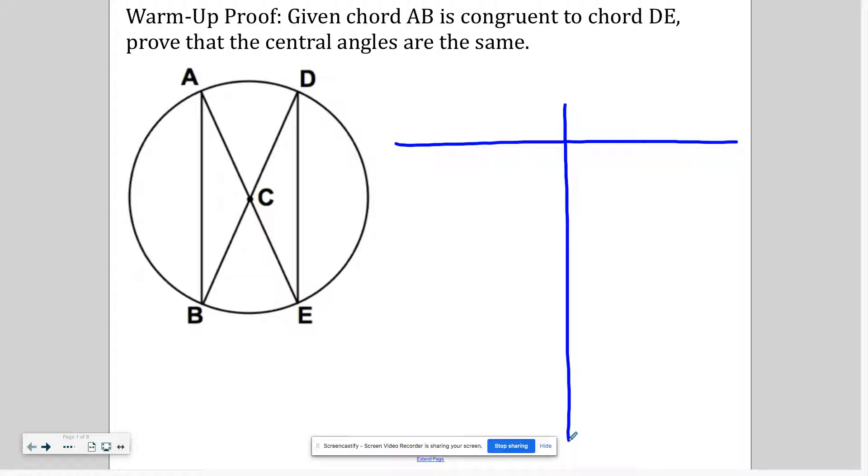Basically the idea on a circle is that if the chords, so this is trying to say that if these chords are the same length, then the central angles, which we're looking at this angle...